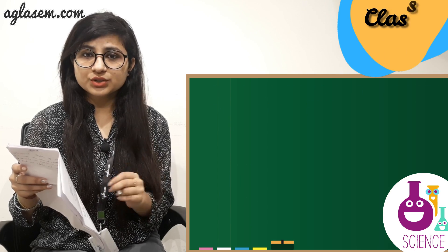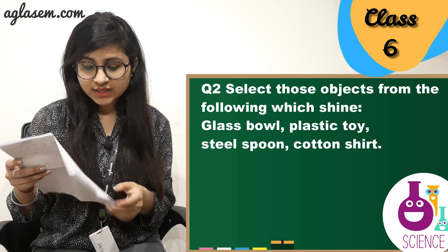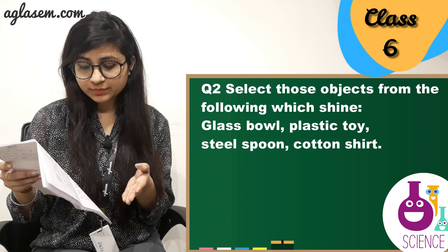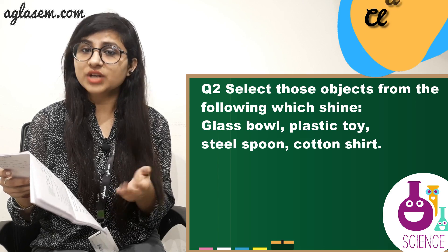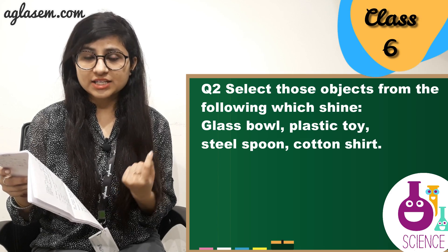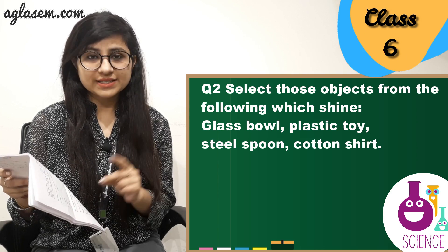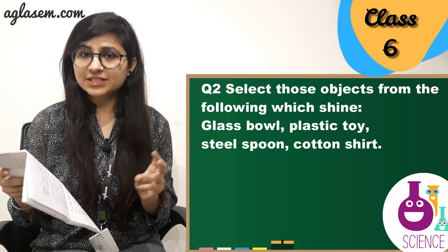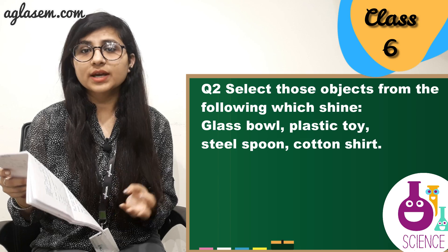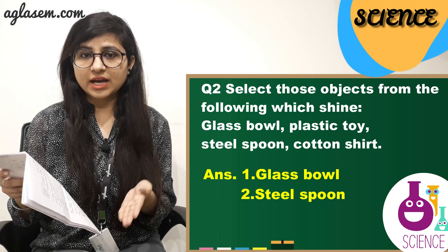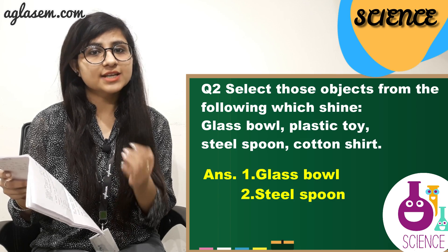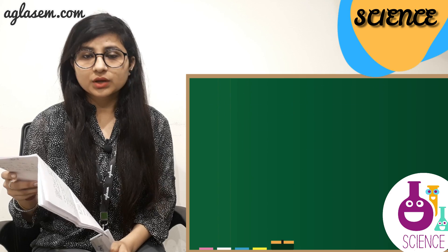Question number 2. Select those objects from the following which shine: glass bowl, plastic toy, steel spoon, and cotton shirt. The answer is glass bowl and steel spoon.